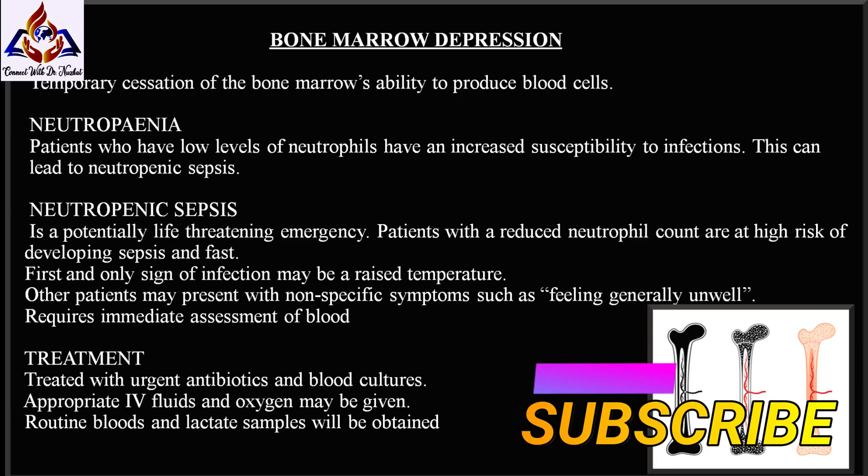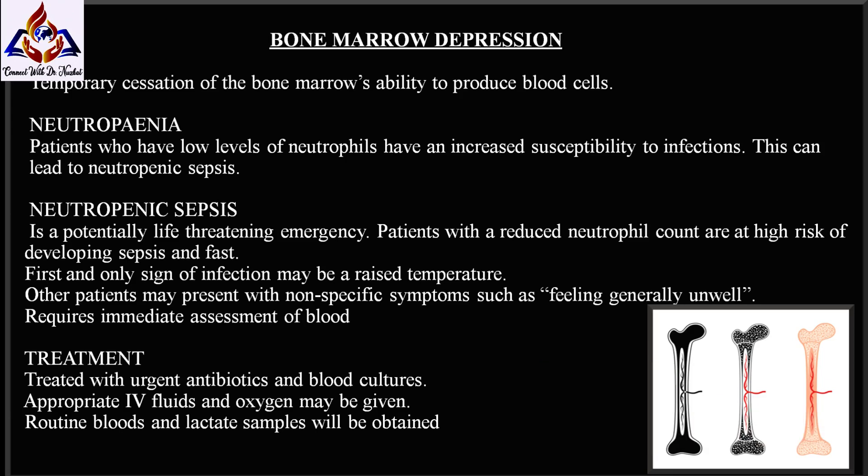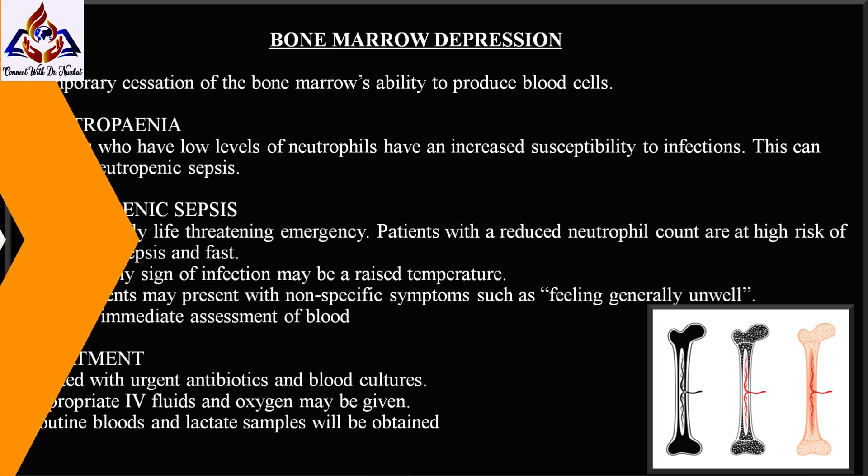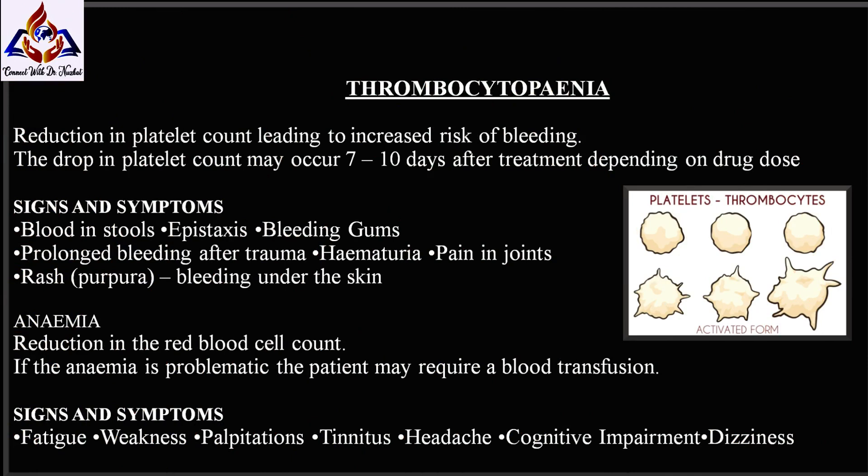Any sign of infection in a neutropenic patient requires immediate assessment by experienced hematology staff. Treatment includes urgent antibiotics, blood cultures, IV fluids, oxygen, and routine blood and lactate samples.